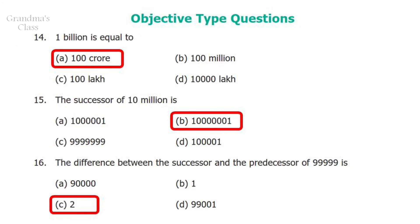Question 14: 1 million is equal to? Your answer is option A, which is 100 crores. Question 15: The successor of 10 million, represented in number form, will be answer B, which is 10 million and 1. Question 16: The difference between the successor and the predecessor of the number 99,999 is 2, which is option C.